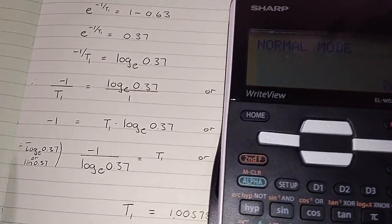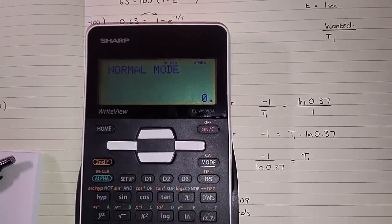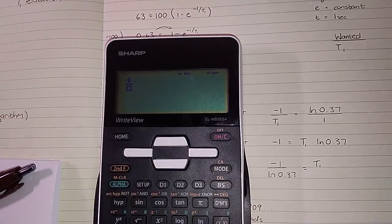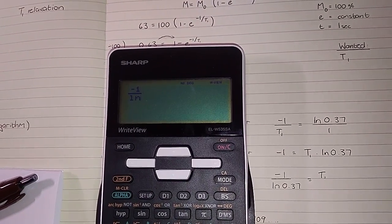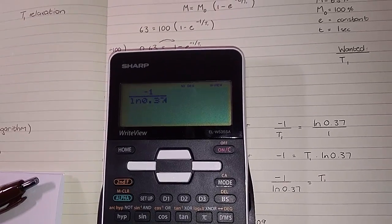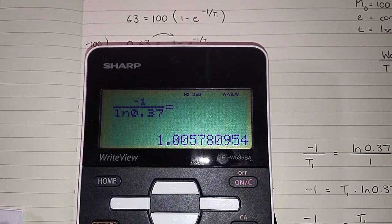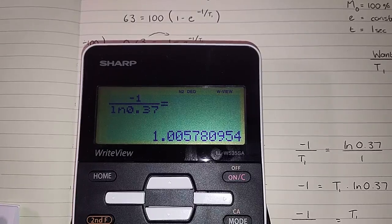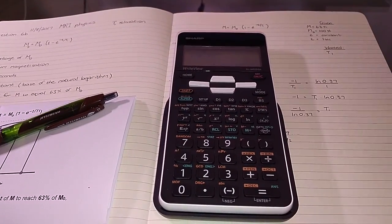So let's take the ln value, it's going to be easier. If the ln value, I would go my negative 1 over ln 0.37, and that would give us the answer of the 1.0057 blah blah blah, which equals to about 1.01.